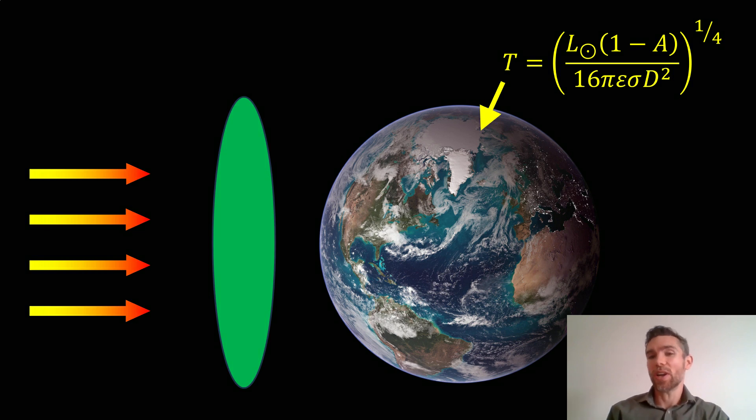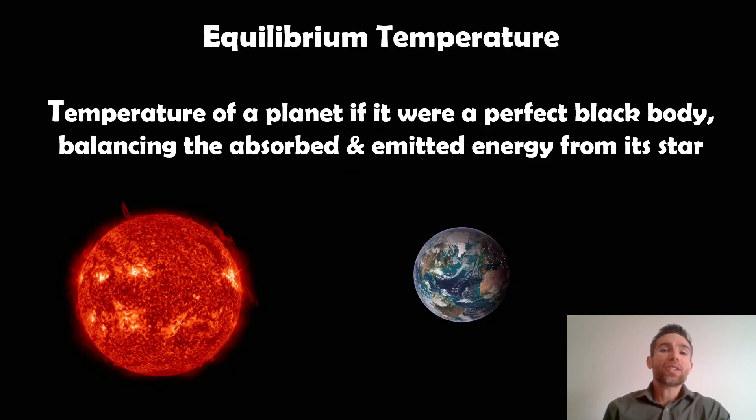We'll use Earth here as an example because it's a pretty good example. We know how hot it is. So what is the equilibrium temperature of a planet? Well, it's the temperature of a planet if it were a perfect black body. That basically means it's balancing the absorbed energy from the star and then emitting energy. It's absorbing some energy and then emitting it in balance.